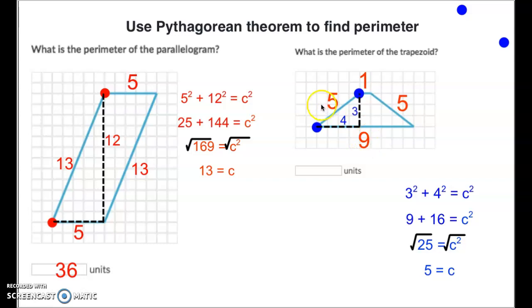1 plus 9 is 10. 5 plus 5 is 10. 10 plus 10 is 20. And that is how you find the perimeter using the Pythagorean theorem for all these shapes.